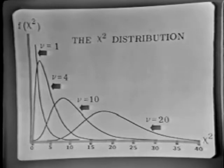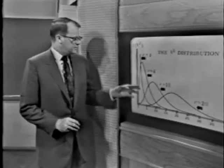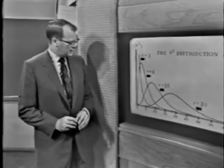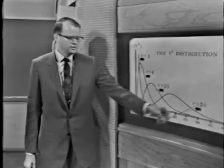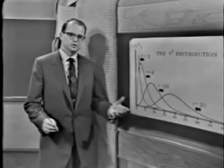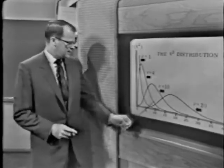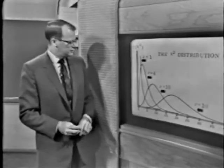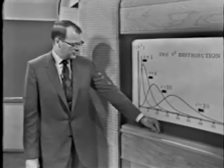The mean of the nu equals 4 distribution is 4. It turns out that the parameter nu — the degrees of freedom — also tells us what the mean of the chi-square distribution happens to be. Another interesting property is what happens as nu gets large. With nu equal to 50, the chi-square distribution converges to the normal. In fact, it's already beginning to look quite normal with nu only equal to 20. For small values of nu, it is of course spectacularly different from a normal distribution.